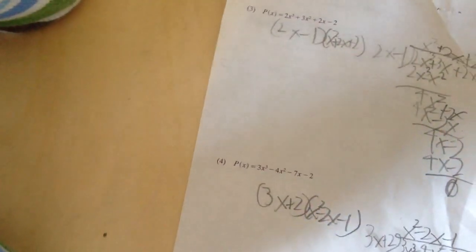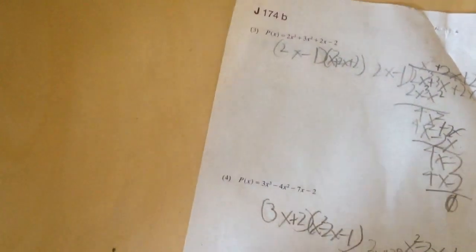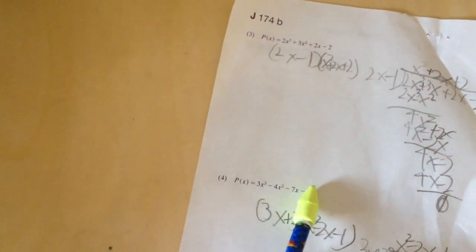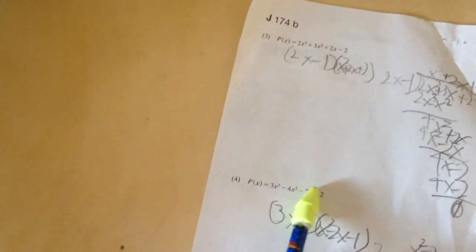How did you know p of negative 2 over 3 would work? Because I just checked it. Okay. And you plugged it all in? Yeah, and then it turned into zero. That's correct. Everything you did is correct.